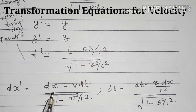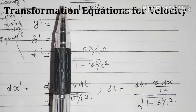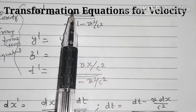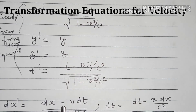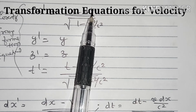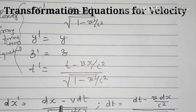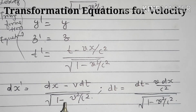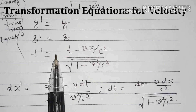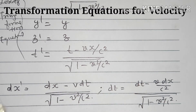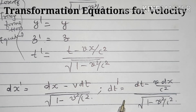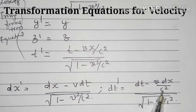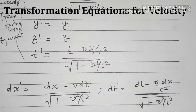Here X is the position coordinate in the S frame and dT is also a variable, so we take the derivative of T as well. We also take the derivative of the time transformation equation, and we get: dT dash is equal to dT minus V dX divided by C squared, all over the square root of 1 minus V squared by C squared.